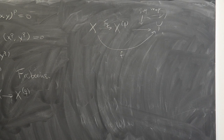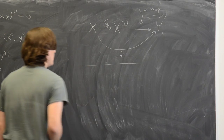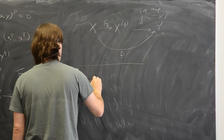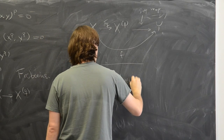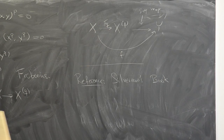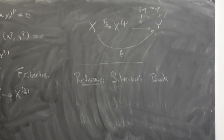In characteristic zero everything is separable. That's all the general curve theory I want to cover. Now I'm going to move on to elliptic curves. I won't be giving many proofs today — a good reference is Silverman's book, his first one on curves; everything I'll say today is proved somewhere in that book.